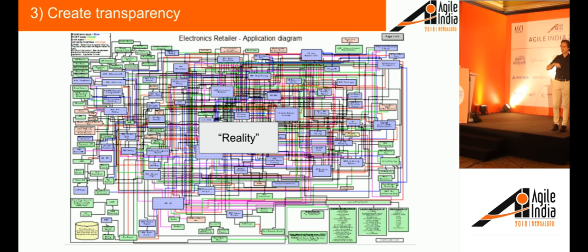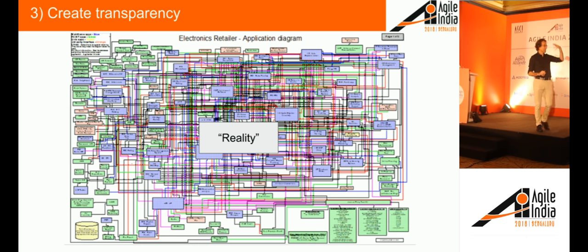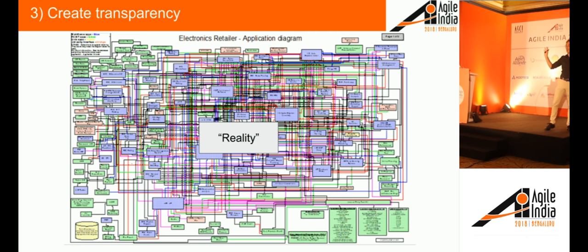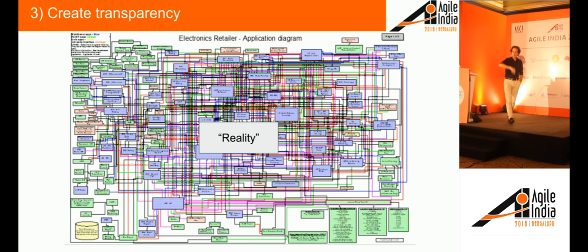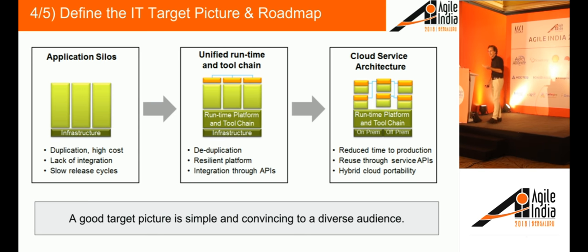The third step is transparency. It sounds much more trivial than it actually is, because if you don't have transparency you can't do anything — you can't steer the organization. Creating transparency in a large organization is a huge undertaking. You need to not just document reality, but find a model to represent reality that allows you to reason about it and chart a roadmap. We have the business strategy, the IT strategy, we have reality, and you will always find a gap — you're never where you want to be. So now you make a roadmap.